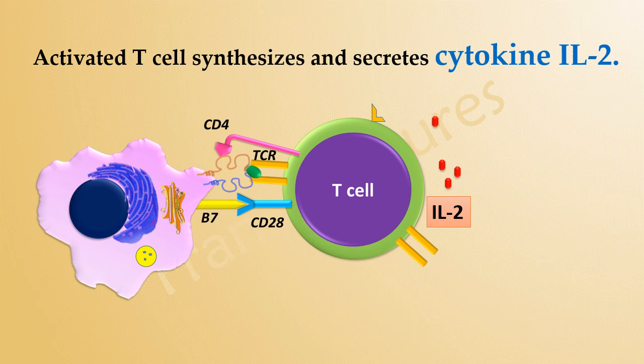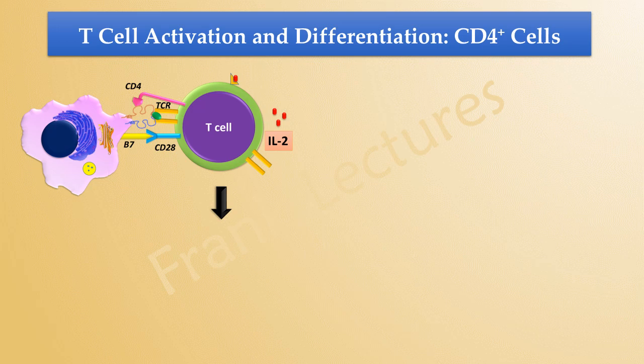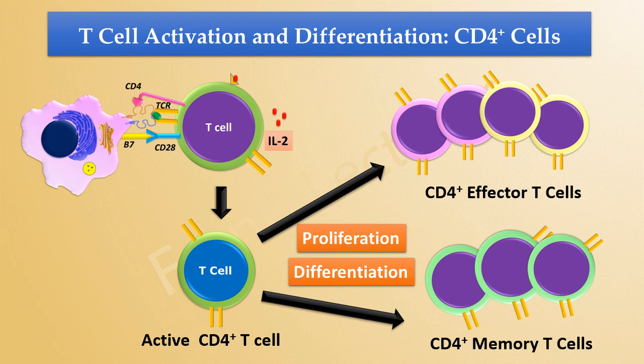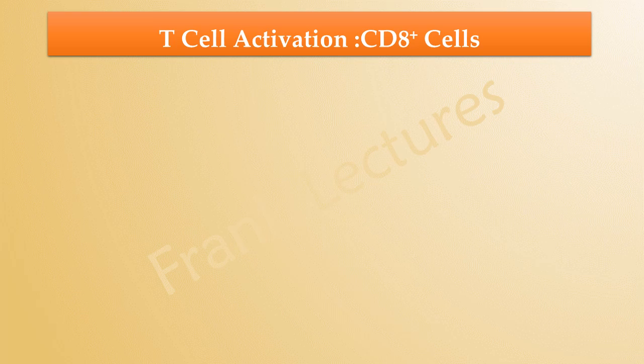Interleukin-2 acts as an autocrine cytokine, meaning it binds to its specific receptor on the same T-cell. The T-cell undergoes rapid proliferation and differentiation, generating a population of effector T-cells and memory T-cells. These CD4-positive effector T-cells develop into diverse subsets of T-helper cells, while CD4-positive memory T-cells can quickly generate more effector and memory cells if the same antigen is encountered in the future.